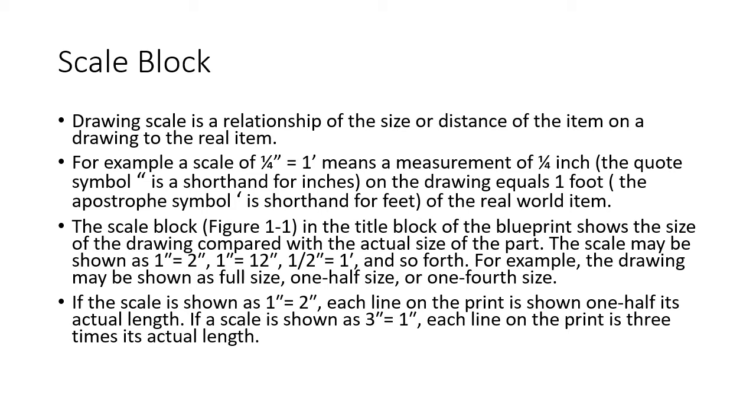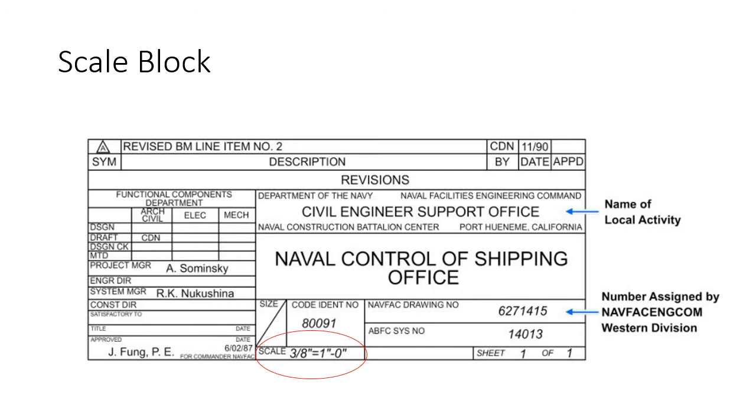If you've got something really small like a microchip or something and you put it on a drawing, it's going to go the other way. So instead of having one inch equals 10 feet or one inch equals 50 feet, one inch might equal a half an inch or a tenth of an inch or a micron, depending on what your scale is. If the scale is shown as one inch equals two inches, each line on the print is shown one-half its actual length. If the scale is shown as three inches equals one inch, each line on the print is three times its actual length. Okay, here's what a scale block looks like. They just throw it down there in the bottom and it tells you what scale you need to be using.